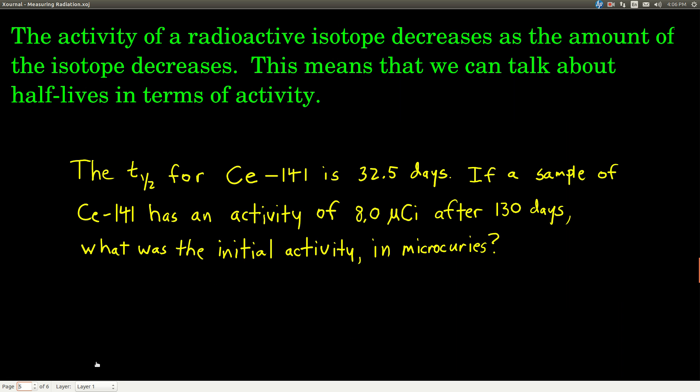So because activity depends upon how much of an isotope is present, we can treat it just like we can amount of the isotope. So when we were doing half-life calculations, we talked about if we initially had this many grams of an isotope, how many grams we left. We can talk about it the same way, but in terms of activities. So if we have this much activity to begin with, after this much time, what's the activity? It's going to depend upon the half-life. So let's do an example.